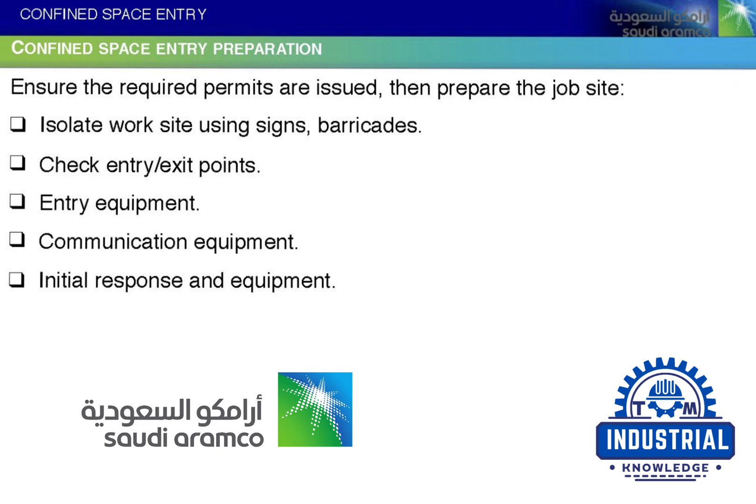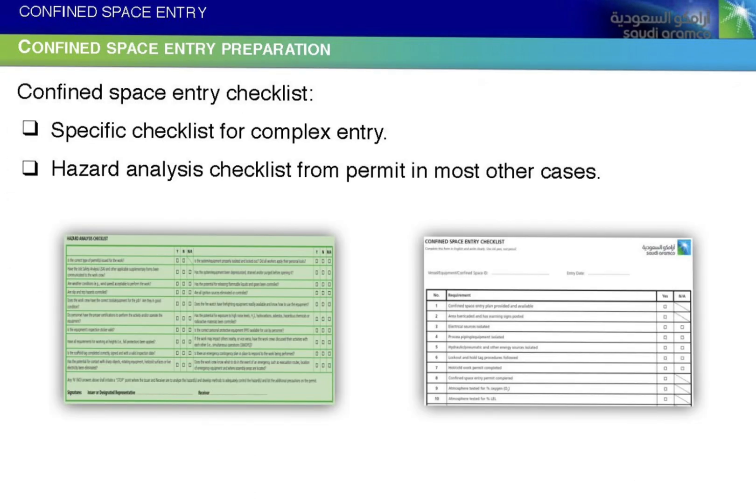Then prepare the job site: isolate the work site using signs and barricades; check entry and exit points; verify entry equipment, communication equipment, and initial response equipment. Use a confined space entry checklist — a specific checklist for complex entry, or the hazard analysis checklist from the permit in most other cases.